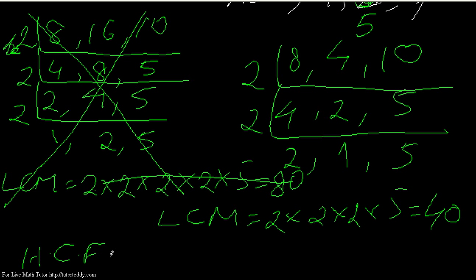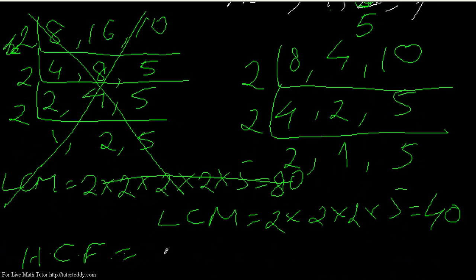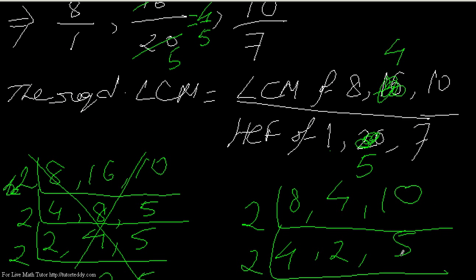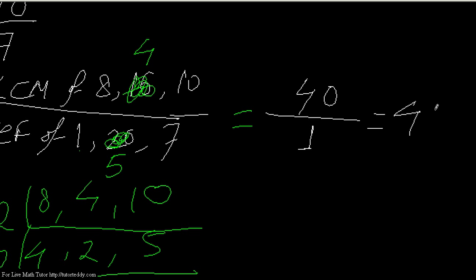For the HCF of the denominators — which are 1, 5, and 7 — I can mentally calculate that all three numbers are only divisible by 1, so the HCF is 1. Therefore, my required LCM is 40 divided by 1, which equals 40.